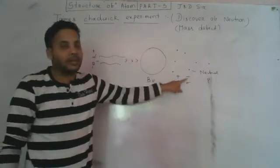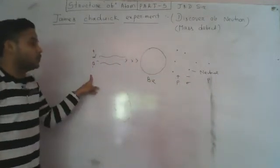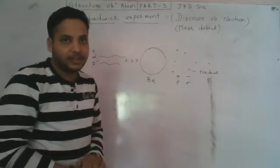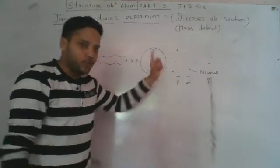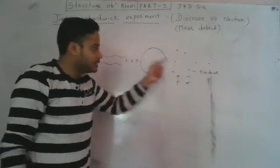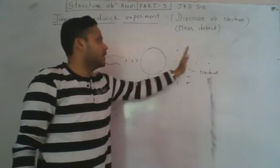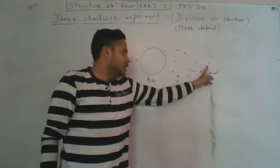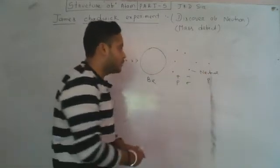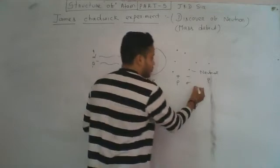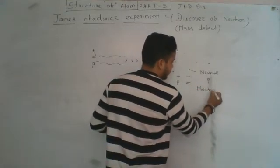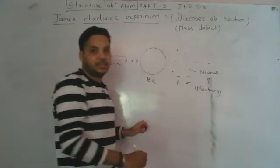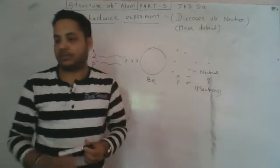The neutral particles are called neutrons. The atom contains neutrons. Neutral particles are neutrons.